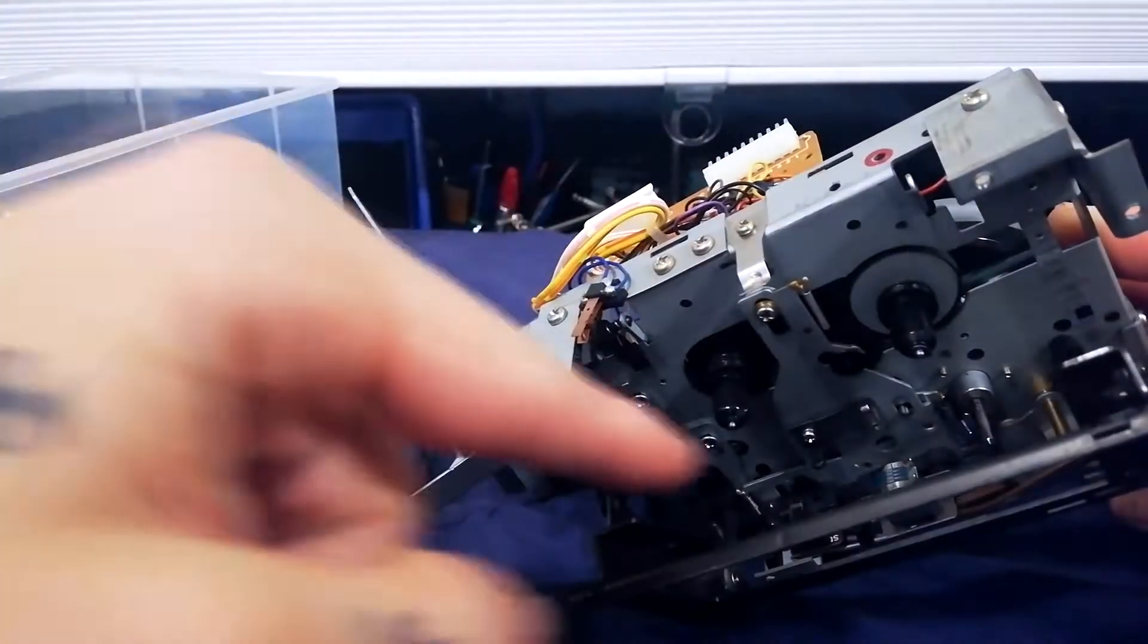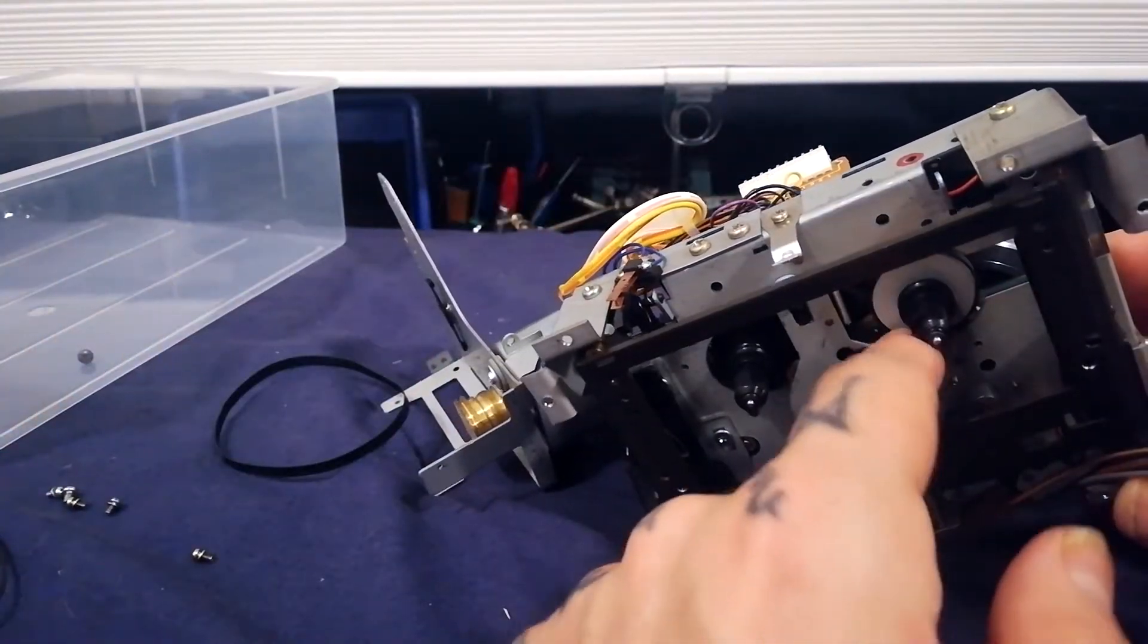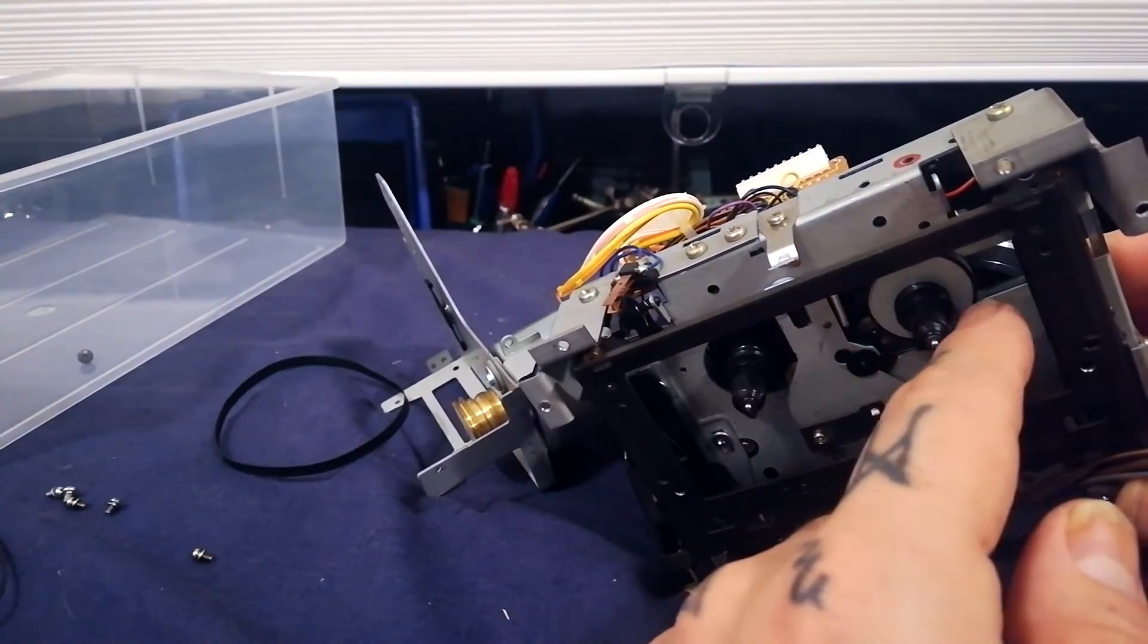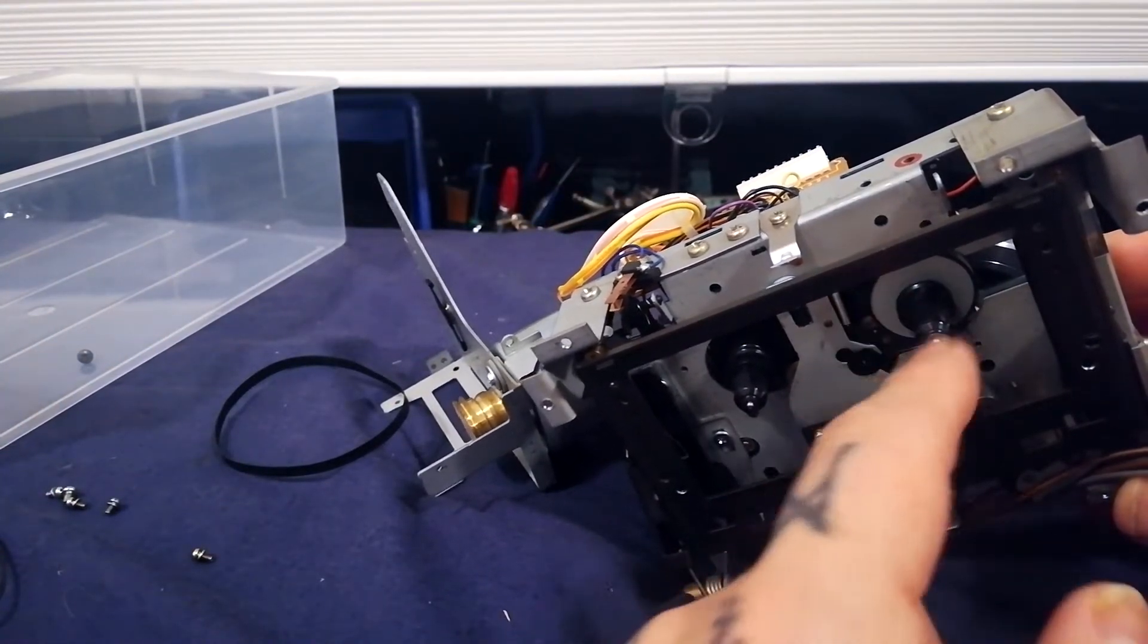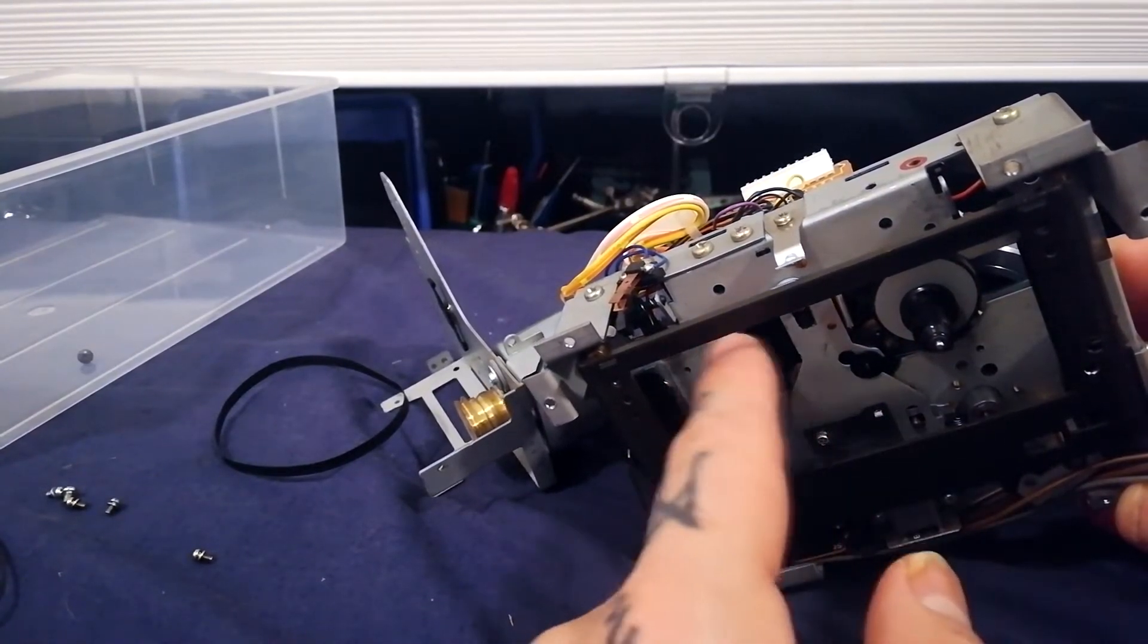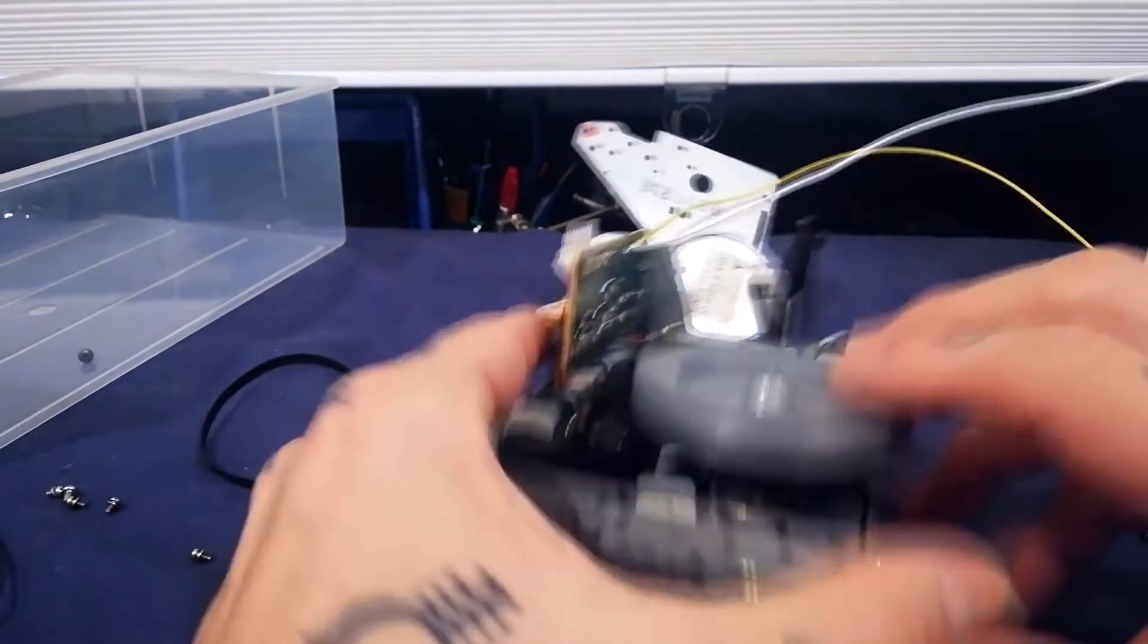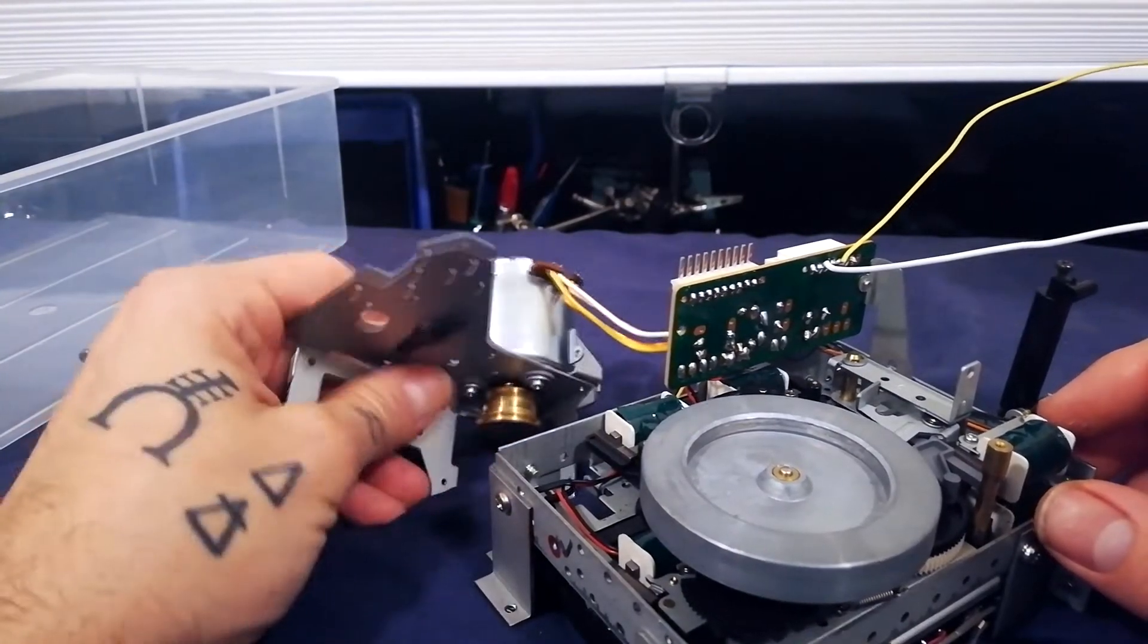That draws the tape across the magnetic heads at a steady speed. The turning of the take up reel in playback and fast forward, and also the turning of the supply reel in this direction in rewind, that is driven by the other section of this brass pulley.